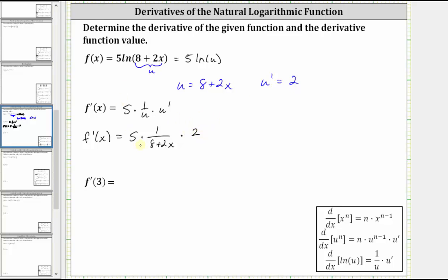Now let's go ahead and multiply. Five times two is 10, giving us 10 divided by the quantity eight plus two x.